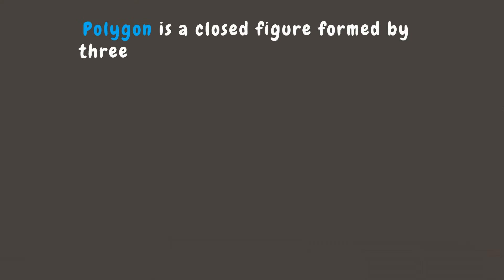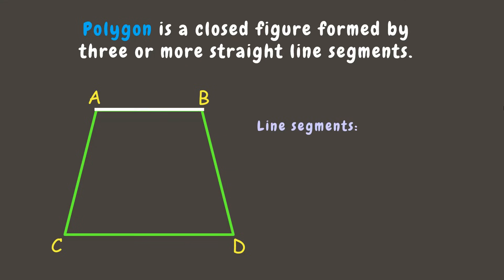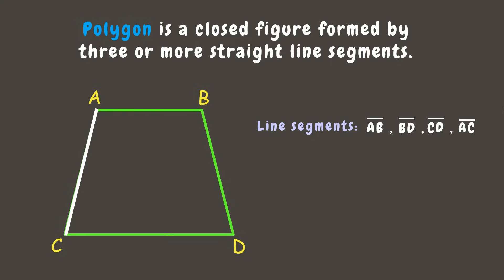A polygon is a closed figure formed by three or more straight line segments. For example, this figure has one, two, three and four sides or line segments. Line segments are straight lines that have two endpoints. Let's name the endpoints as A, B, C, and D. This means that this polygon has line segments AB, BD, CD, and AC, which can also be called the sides of the polygon.